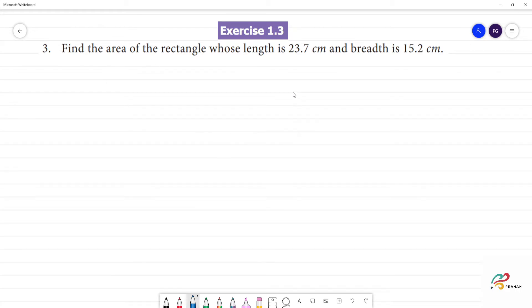Find the area of the rectangle whose length is 23.7 cm and breadth is 15.2 cm. What is a rectangle? This is a rectangle.